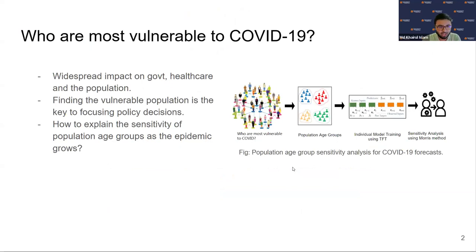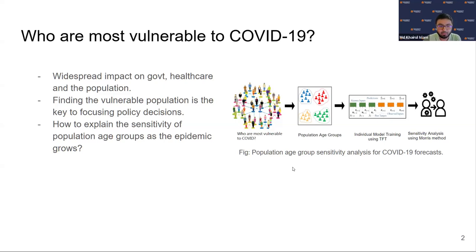To begin with, a lot of the policies during COVID-19 time were based on different population age groups — like trying to give priority for vaccination to certain age groups, or shutting down offices because a population from certain age groups was being more COVID-19 positive. So we had the idea: can we actually predict how much certain age groups will be affected by COVID-19, using deep learning models?